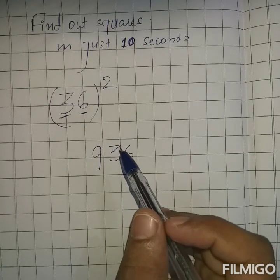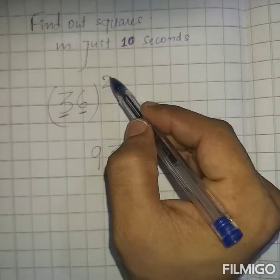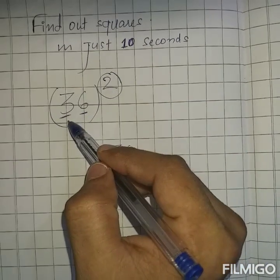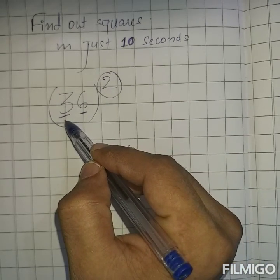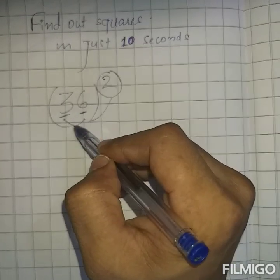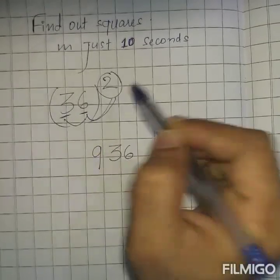Now step number 3. Now what you have to do, you have to multiply all the numbers that are present, even including index 2. So simply you will multiply all the digits with each other. So 3 with 6 and then with 2. So 3 multiplied by 6 multiplied by 2. What is the answer? 3 × 6 = 18, 18 × 2 = 36.